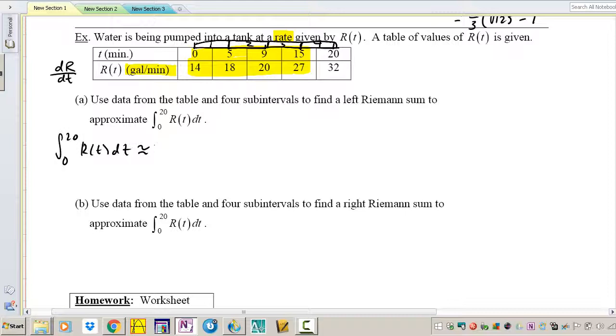So let's go ahead and use left Riemann sum. If you remember your left Riemann sum, we take the left points and we use base times height. Let's go ahead and approximate the area under the curve. We don't know what the curve is, it's approximated. What is the base of the first rectangle? The base of the first rectangle is 5 times the height. We're using left Riemann sum so we start from the first, 14. The base of the second rectangle is 4 times the second height is 18. Base of the third rectangle, 6 times 20, plus the base of the last rectangle which is 5 times 27.